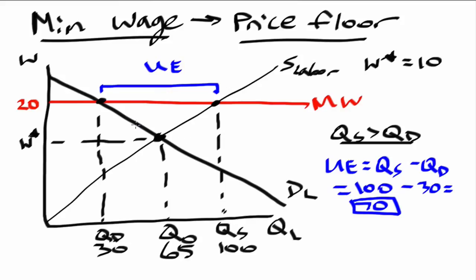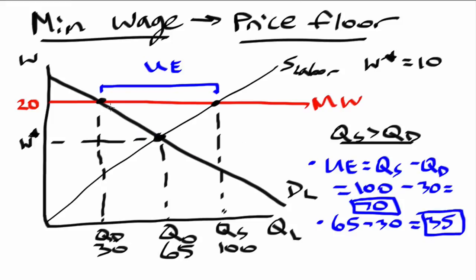The next question we might be asked is: how many workers lost their job as a result of this minimum wage? We look at the difference between the original equilibrium quantity and now the quantity demanded. In this case, that would be 65 minus 30, which is 35 — the number of people that have lost their job. Now let's think about how many people enter the market because of this minimum wage. That would be quantity supplied minus the original equilibrium quantity: 100 minus 65, which also happens to be 35.